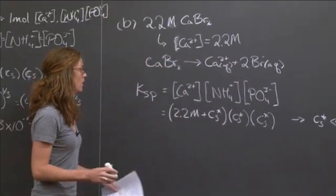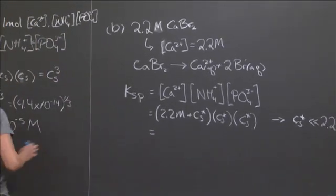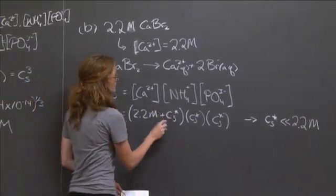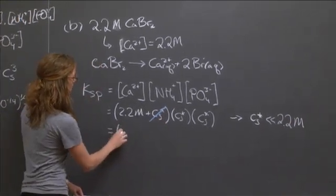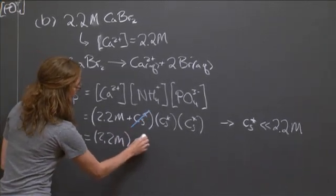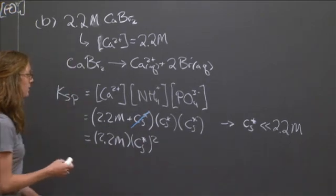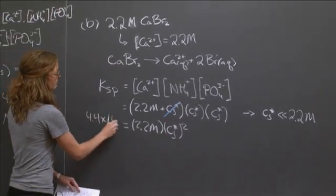Going back to our equation over here, that means we can cross this out. We can have, and now we have a fairly simple algebraic problem.